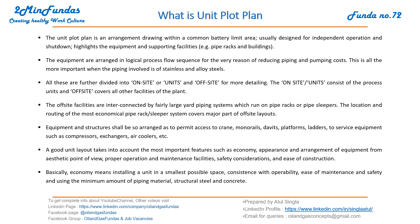We divide unit definitions into two parts: on-site and off-site. On-site refers to the process unit, while off-site covers all other facilities of the plant. Off-site facilities are interconnected by fairly large yard piping running on pipe racks or sleepers. Pipe racks and sleepers also exist within unit battery limits but are smaller. The location and routing of the most economical piping and sleepers cover a major part of the off-site layout. Equipment and structures shall be arranged to permit access by crane, monorail, davit, or platform to service equipment such as compressors and exchangers.